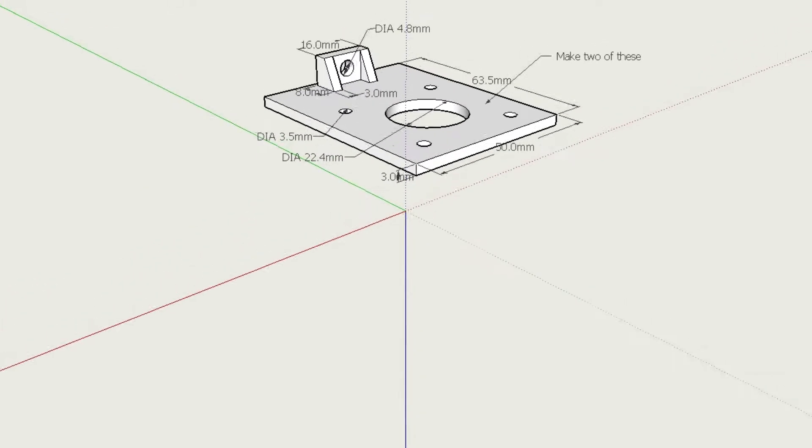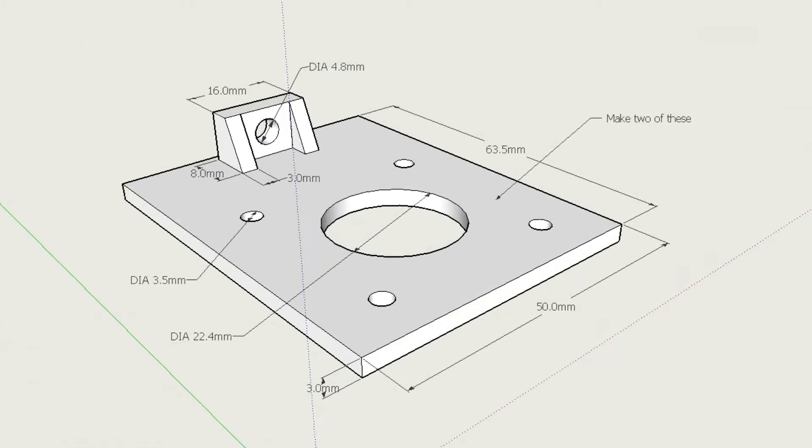The motor mount is a flat plate with holes to match a NEMA 17 stepper motor. One end of the plate has a bracket to match the tensioner, so a machine screw can be used to tighten the drive belt.